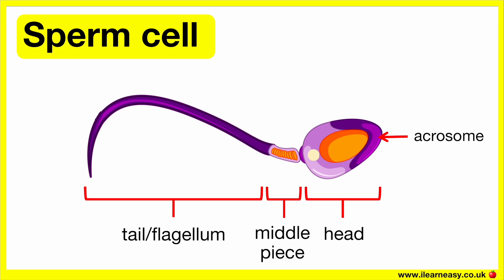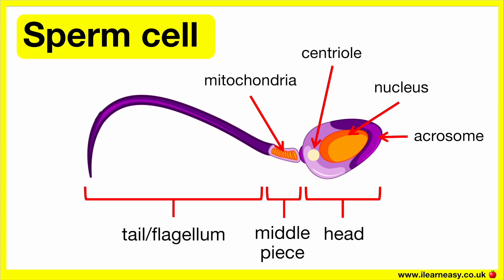The egg membrane is a protein coating around the egg cell which needs to be broken through to allow fertilisation to take place. The haploid nucleus contains the genetic material for fertilisation. The centriole plays an important role in pre- and post-fertilisation. Sperm cells also contain many mitochondria which release energy for movement. Sperm cells are produced in large numbers, which helps to increase the chance of fertilisation.